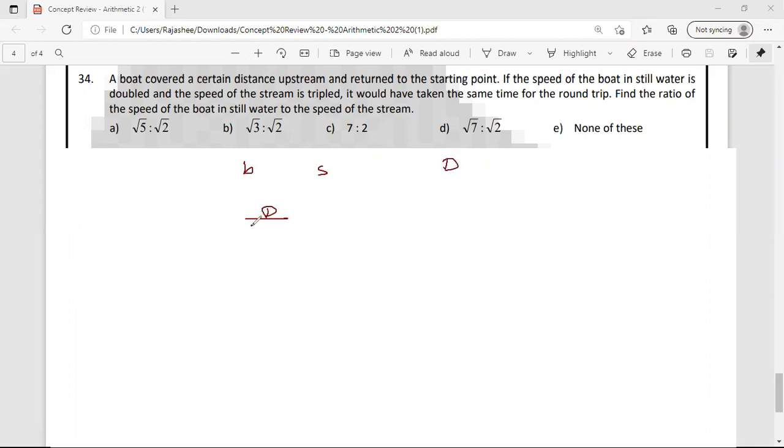So D by B plus S downstream, plus D by B minus S. Total time taken for the entire journey. Then D by 3B minus 2S plus D by 3B plus 2S.